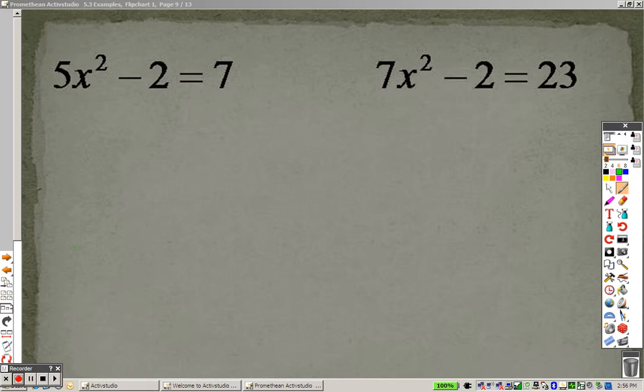Alright, so hopefully the last section here, 5.3. I'm going to try solving some quadratic equations here. So to solve this, I would need to add 2 to both sides because we want to get the numbers on one side, so I get 5x² equals 9.